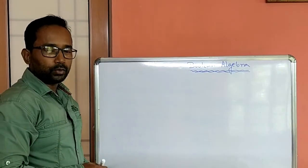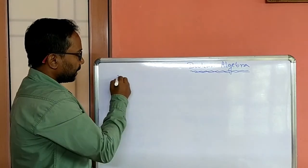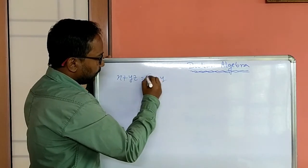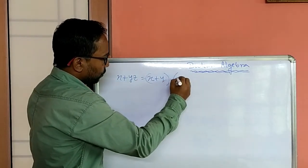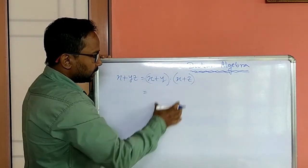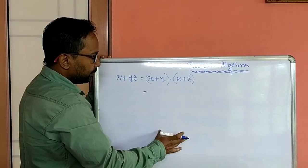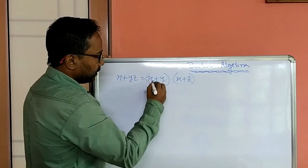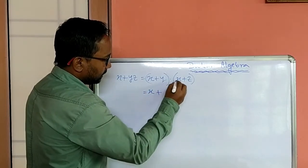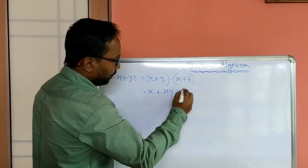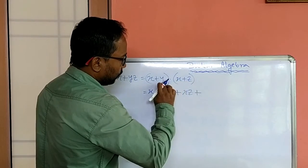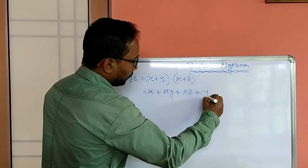Now we will prove one boolean equation. Let's take one distributive law: x plus yz equals x plus y into x plus z. Take the right hand side expression and simplify this to check that the simplified value is equal to x plus yz or not. So you multiply: x into x equals x, plus x into y equals xy, plus x into z equals xz, plus y into z equals yz.